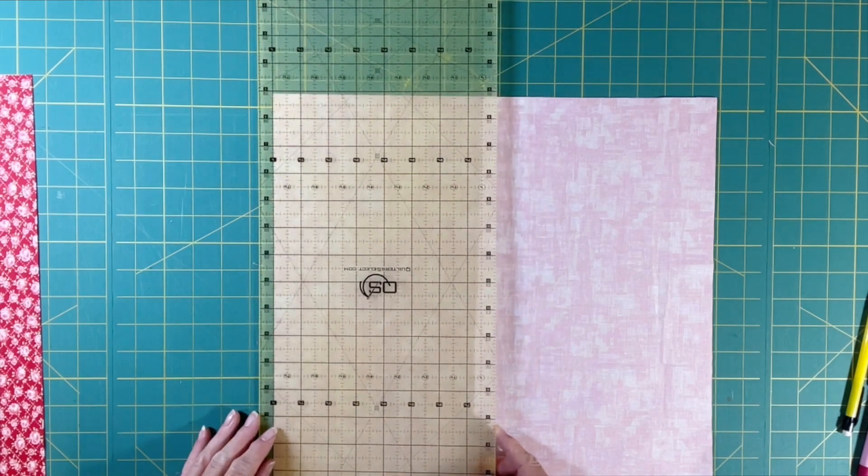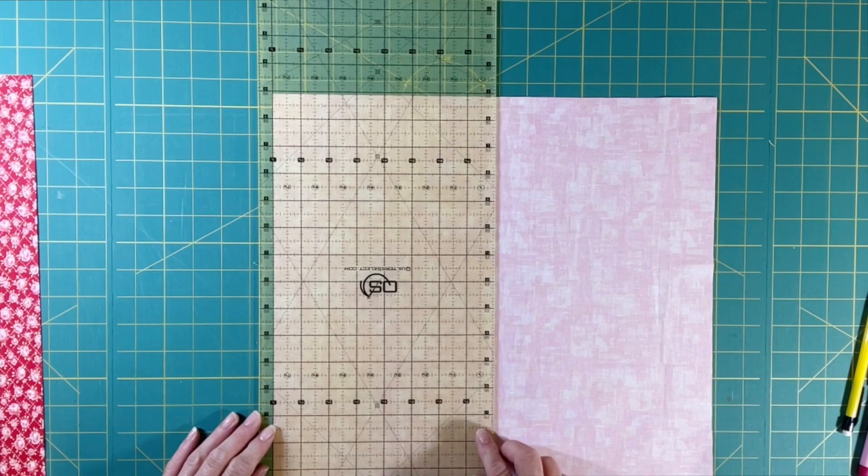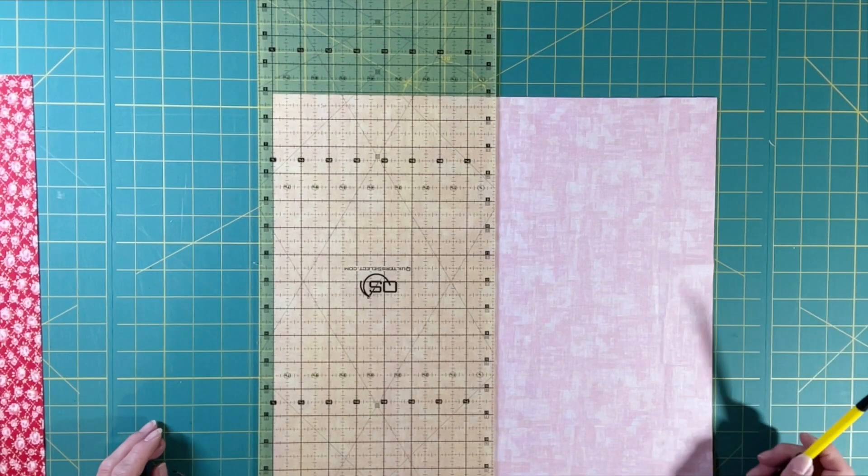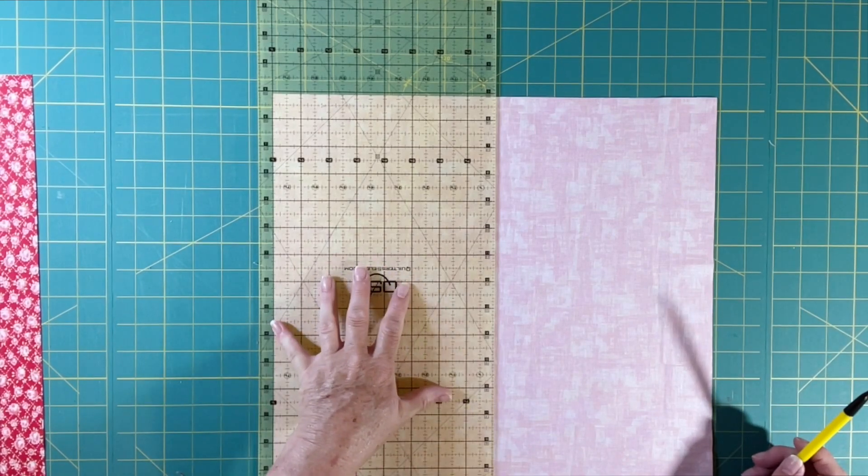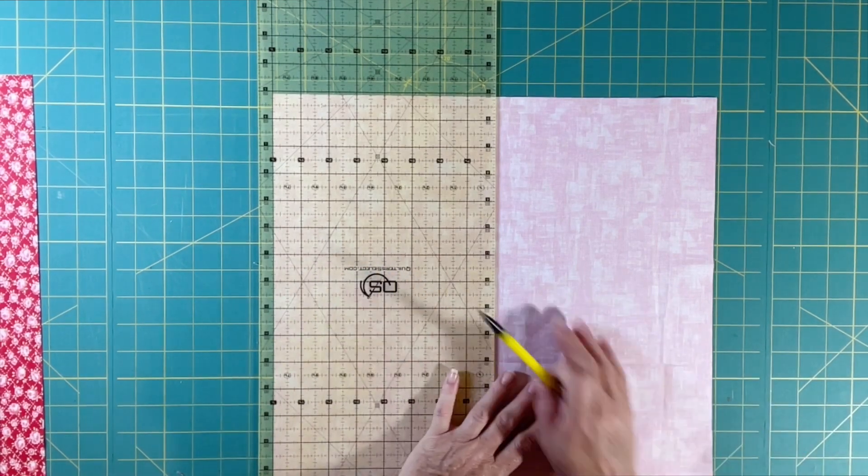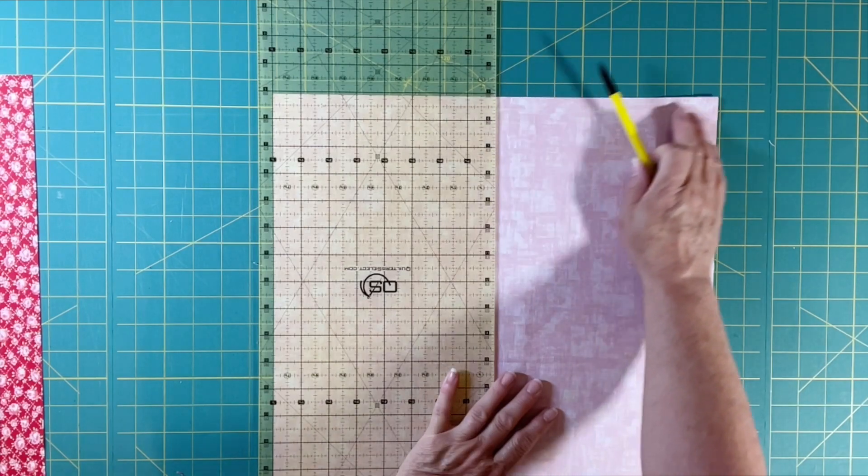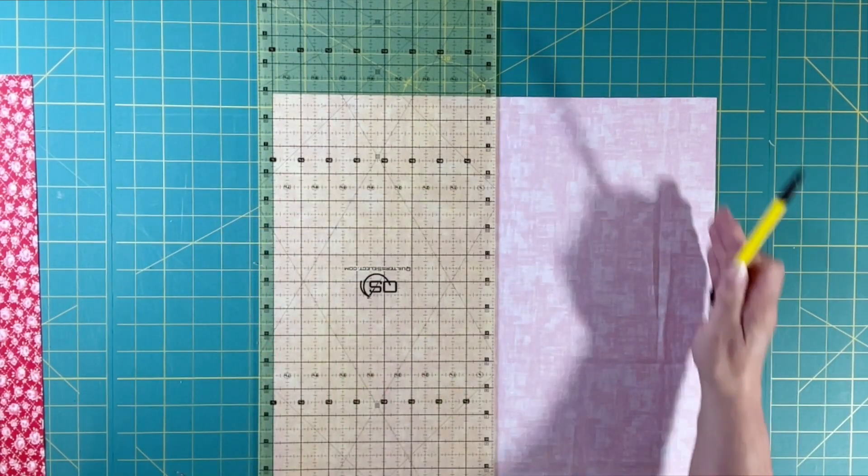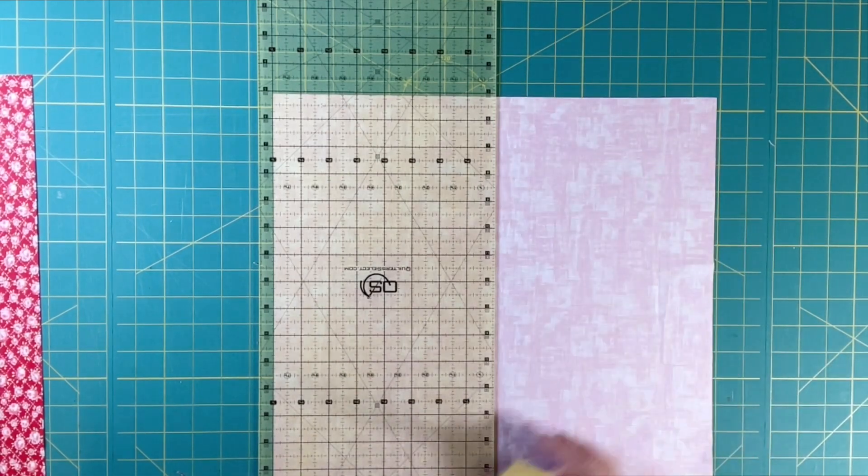This is 16 inches, my ruler is eight and a half, so I'm just going to mark over on the eighth mark. Now if you don't have a ruler that's this wide, just squarely put your 16 inch square within the grid of your mat and use those markings.